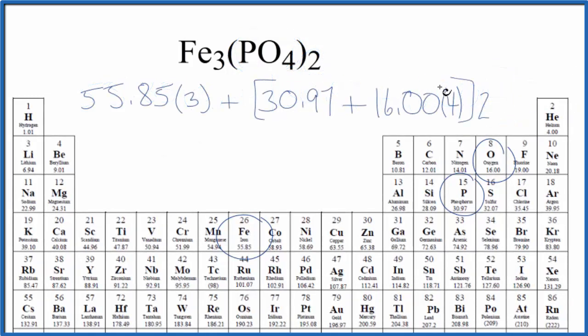So we get this number inside, multiply it by two, add it to the three iron atoms. We end up with a molar mass for Fe3(PO4)2, that iron(II) phosphate, of 357.49 and the units are grams per mole.